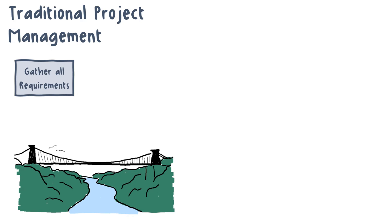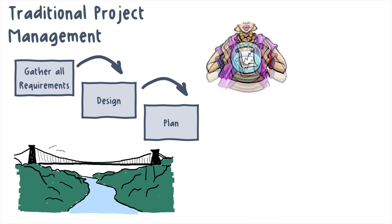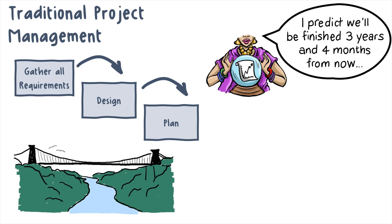Based on that list of requirements, we will design a solution. Note we won't start designing our solution until we have finished gathering and documenting our requirements, because our civil engineers are going to be coming up with the design based on those requirements. Then we'll be able to use that design to understand exactly what resources, materials, and budget we'll need — map it all out and plan the project in great detail. We'll be able to predict that we're going to complete the project in, say, three years and four months. This traditional approach is sometimes referred to as predictive, or even plan-based — we're following the project plan.